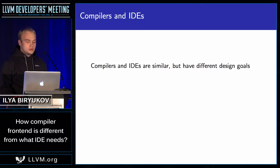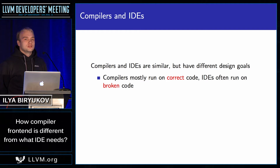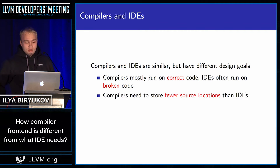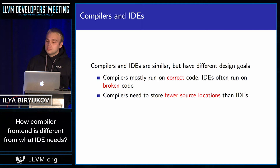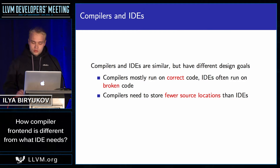Here are just a few differences that come to mind. Firstly, compilers mostly run on correct code and are not generally required to do sophisticated error recovery. IDEs, on the other hand, run on broken code all the time and good error recovery is crucial for them. Secondly, compilers need to store fewer source locations than IDEs because IDEs do a lot of code transformations, but compilers usually just need some information to show you a compiler error, and their frontends may not be designed to store the whole information that you would need in an IDE.